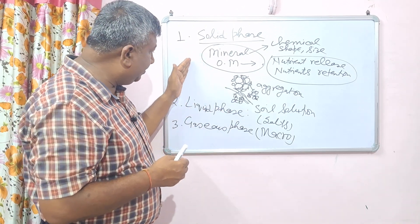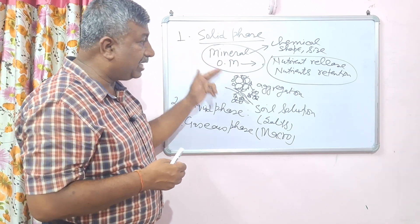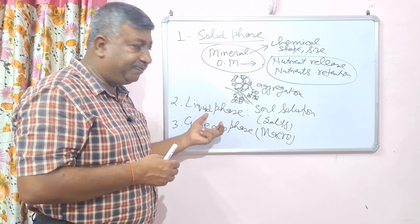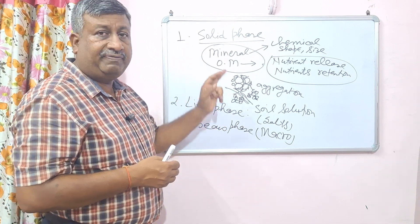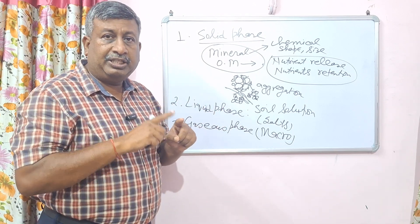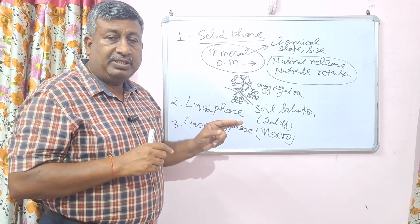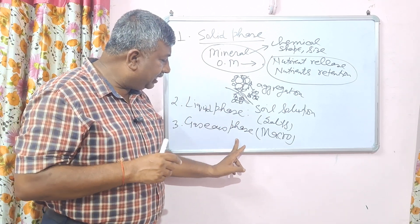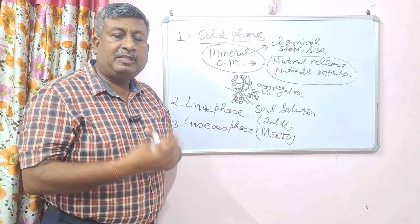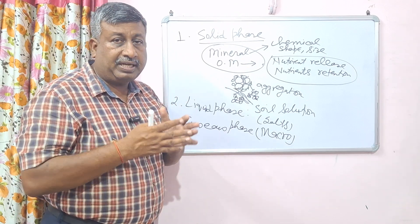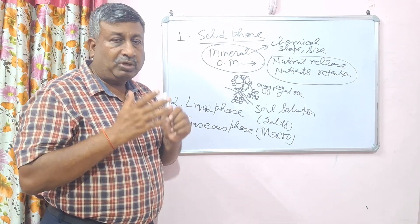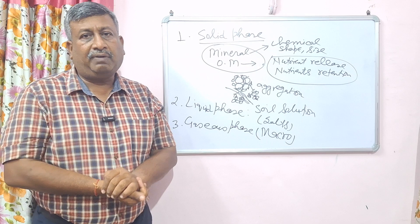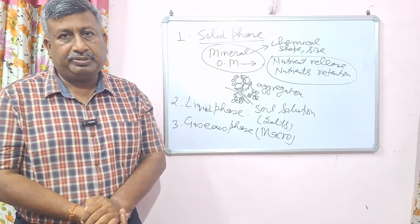These three phases are very important: the solid phase decides aggregation, which in turn affects the liquid phase and gaseous phase. The solid phase is important for nutrient release and soil fertility. The liquid phase is important for water absorption and nutrient absorption. The gaseous phase is important for respiration. So these three phases are very important from soil fertility and plant growth points of view. This concludes the lecture on the three phases of the soil system. Thank you very much.